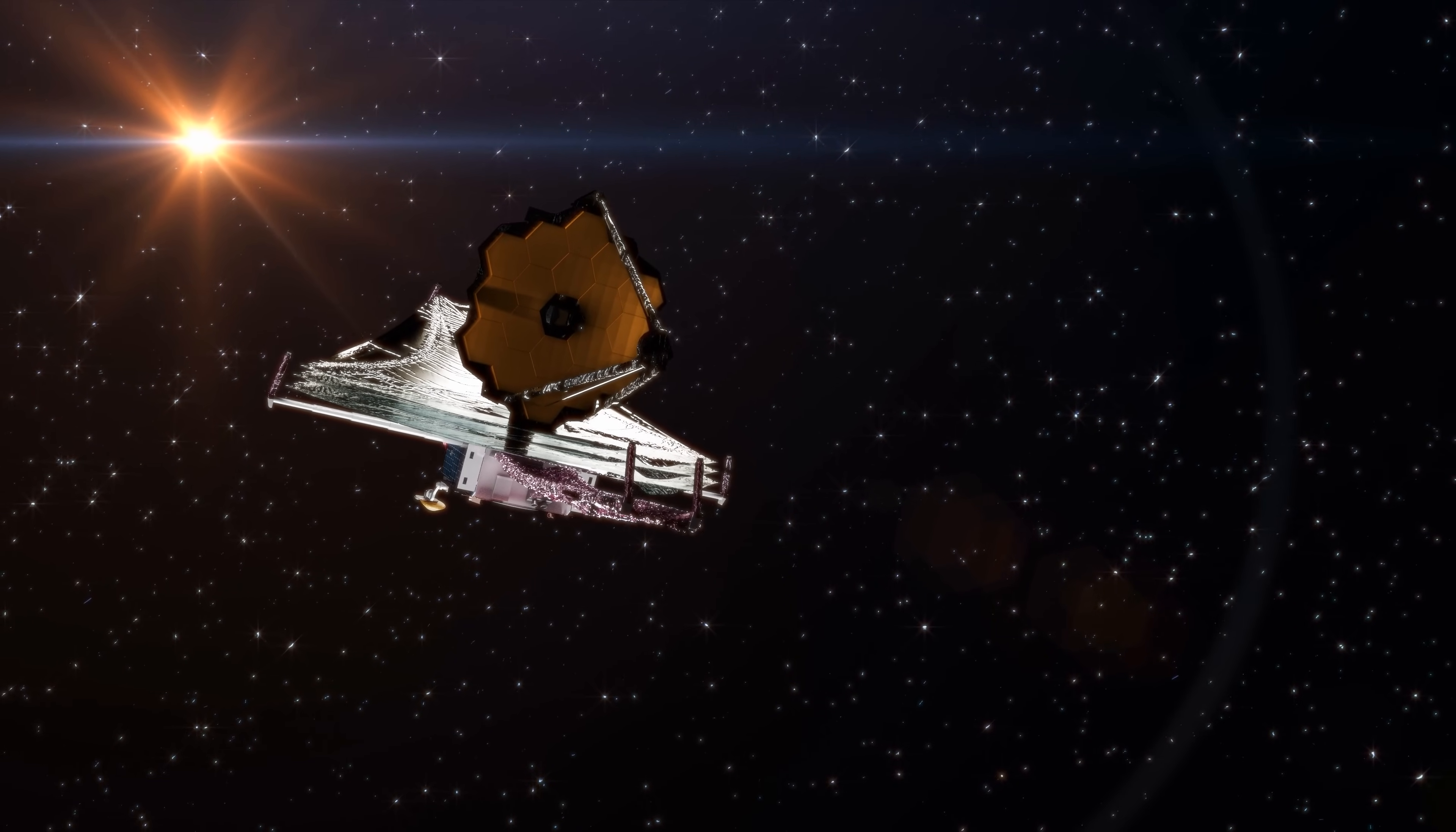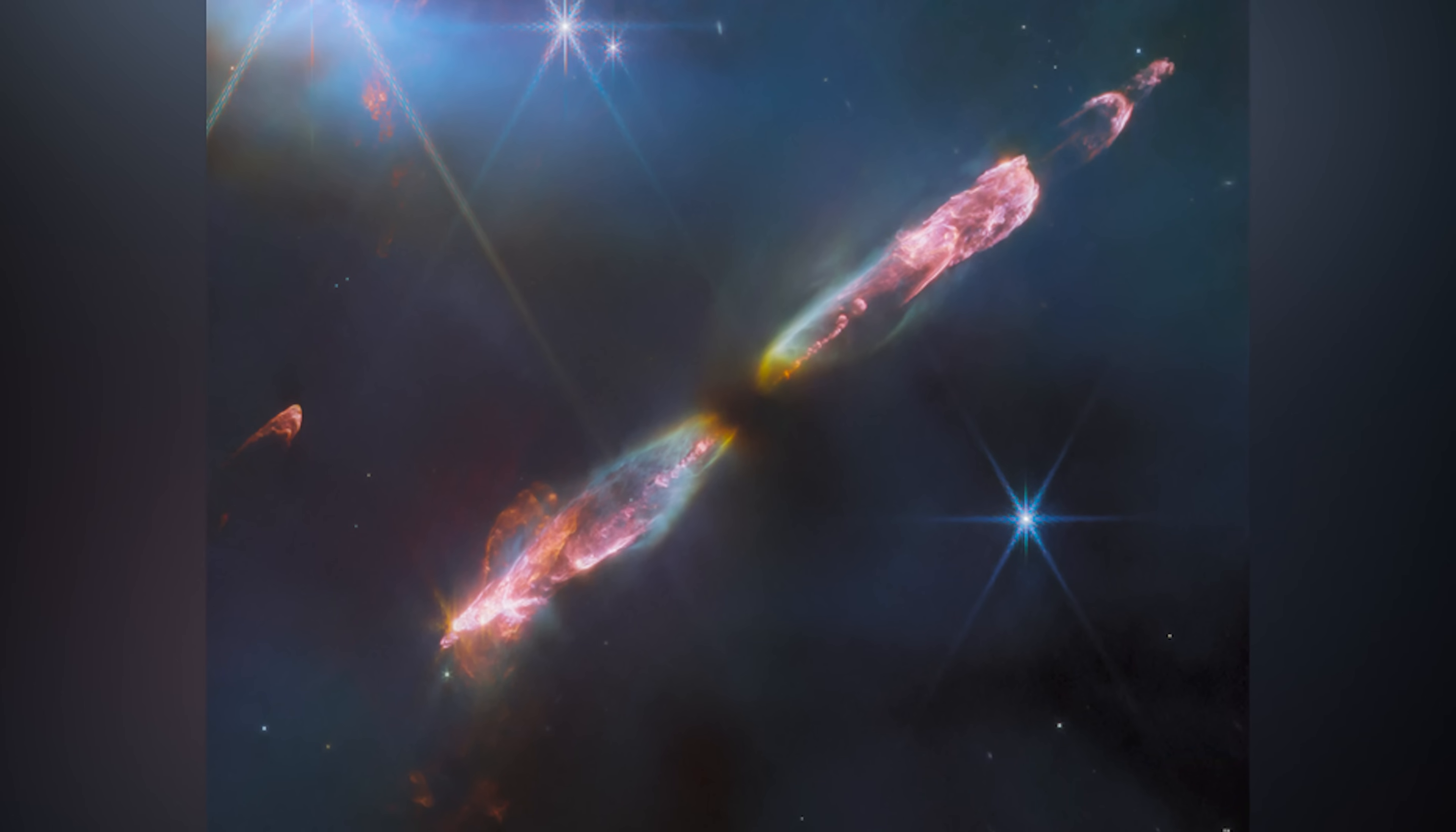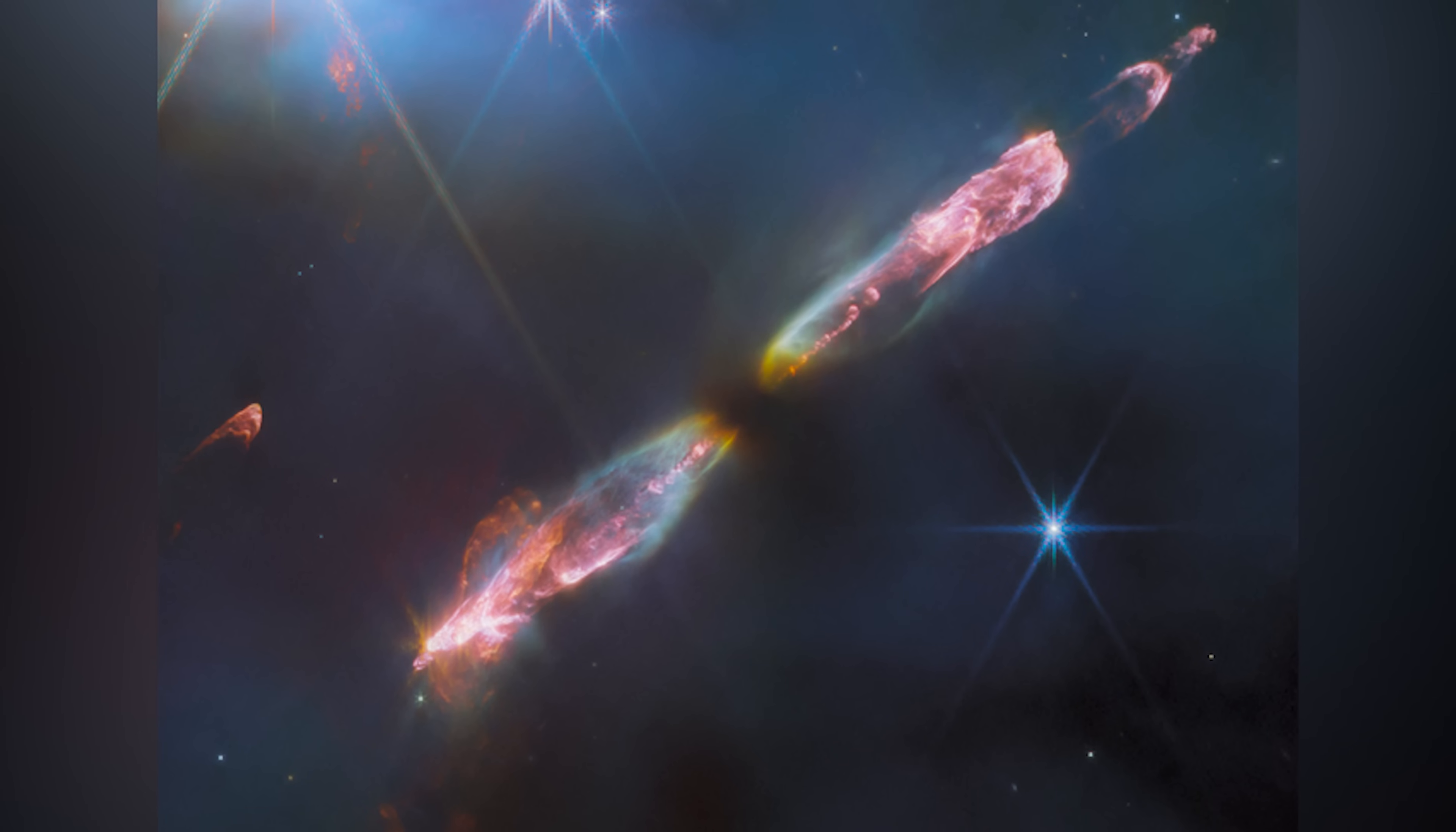What the Webb Telescope captured is called a Herbig-Haro object. In particular, this phenomenon is called the Herbig-Haro 211 object and is located at a distance of 1,000 light-years from Earth.